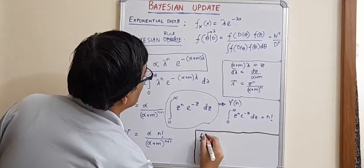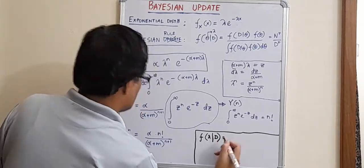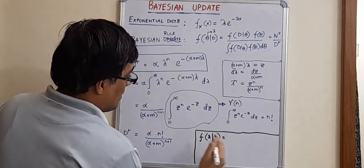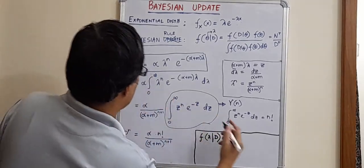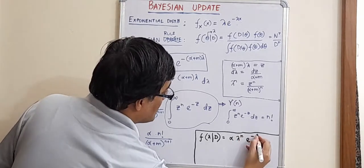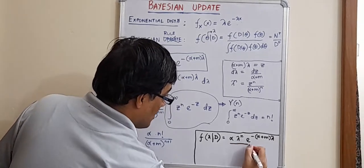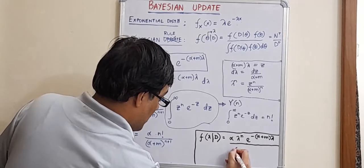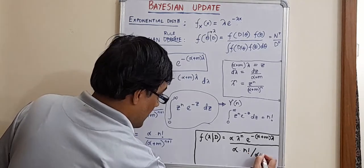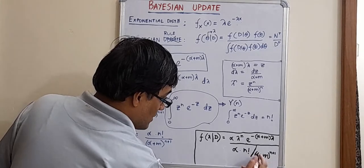What we can write is lambda given data is basically putting it all together. So, this is alpha into lambda to the power n into e to the power minus alpha plus m lambda divided by alpha into factorial n. This has to be divided by alpha plus m to the power n plus 1. Slightly messy looking expression but it's fine.